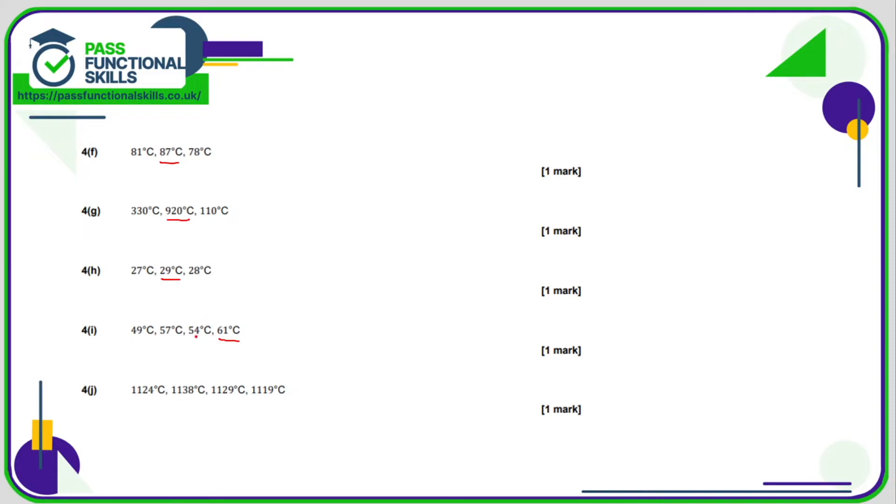61 is bigger than the 50s and the 40s. On this final one, let's just double-check. They all begin with a 1 and a 1. So let's have a look at the numbers in the tens column. We've got a 2, a 3, a 2, and a 1. So 3 is bigger than 2 and 1, so that is the largest temperature.